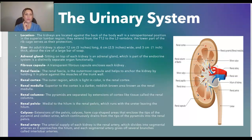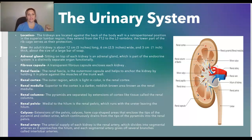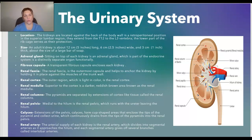The kidneys are located against the back of the body wall in a retroperitoneal position in the superior lumbar region. They extend from T12, or thoracic 12, to lumbar 3 of your vertebrae, and the lower part of the ribcage serves as protection to the kidneys. The adult kidney is about 12 centimeters or 5 inches long and 6 centimeters or 2.5 inches wide, and it is about 3 centimeters thick.